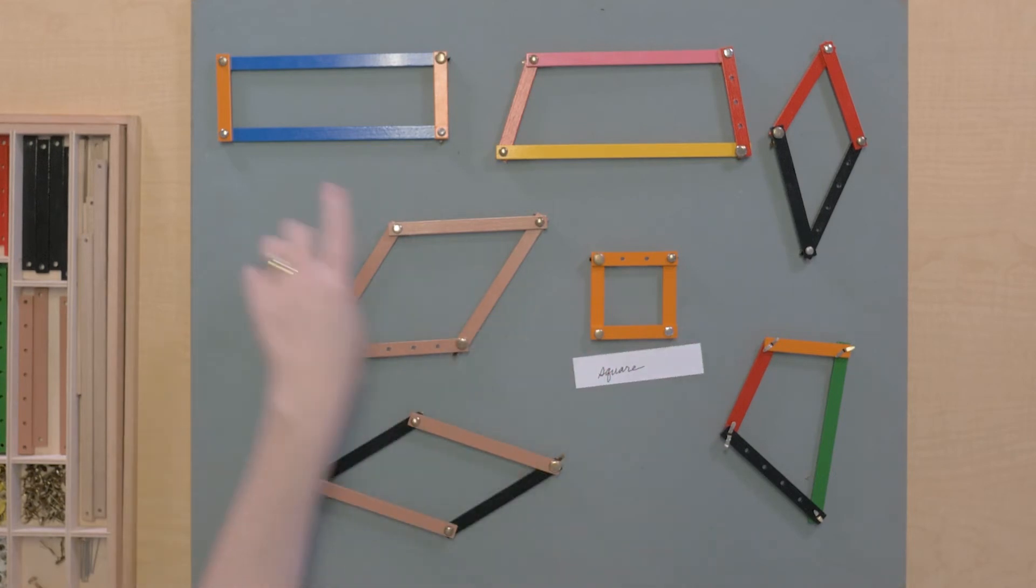Oh, and the rectangle, you recognize that one also? Let's write rectangle. This one here that isn't a regular polygon that has all four sides different—we can just call that a common quadrilateral.